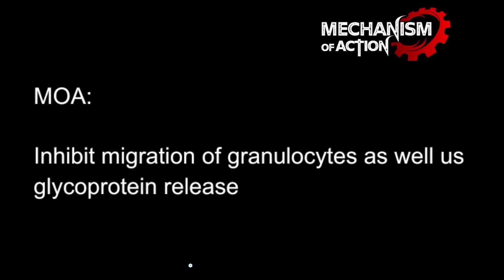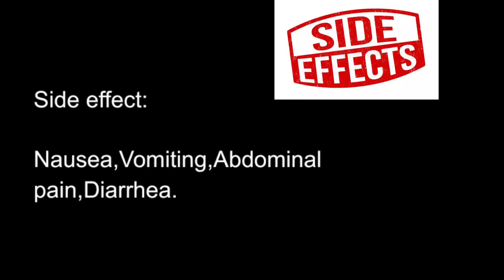Colchicine inhibits the migration of glycosides and glycoprotein release, and is used as a treatment of gout. The side effects of Colchicine include nausea, vomiting, abdominal pain, and diarrhea.